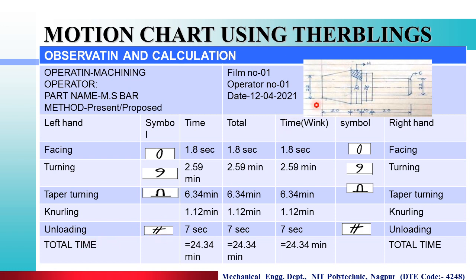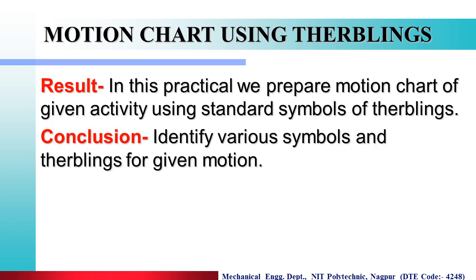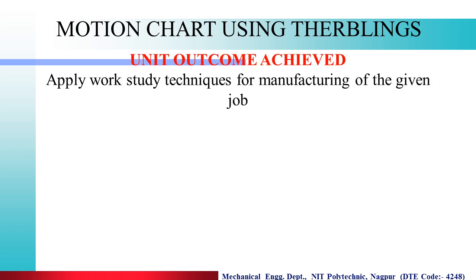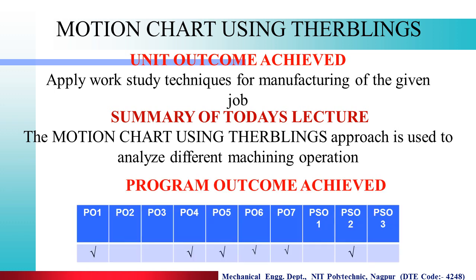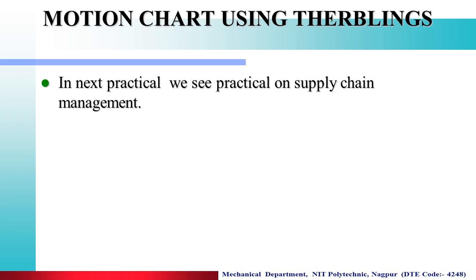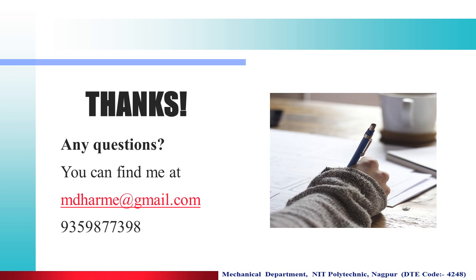Then Unloading — Unloading process. That is the Total Machining Time: 24.34 minutes. In this practical, we prepared a motion chart of given activity using standard symbols of Therbligs. Conclusion: Identify various symbols of Therbligs for given motion. Apply Work Study Technique for manufacturing of the given job. The motion chart using Therbligs approach is used to analyze different machining operations. The program outcomes achieved are PO1, PO4, PO5, PO6, PO7 and PSO2. In next practical, we see practical on Supply Chain. Thanks — for any query, contact this number.